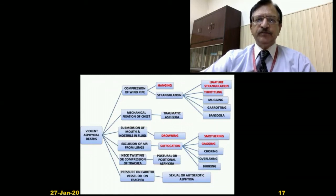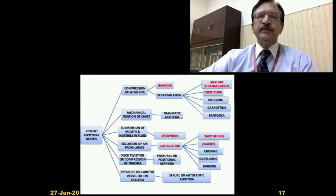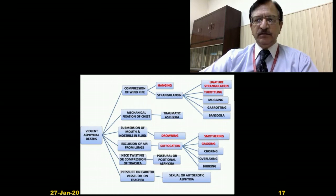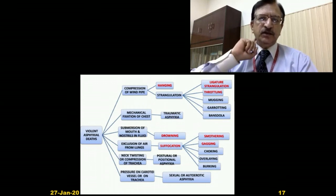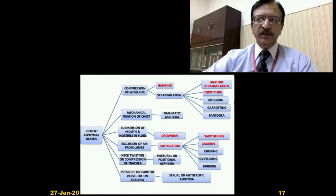Another classification of asphyxial death includes compression of the windpipe by hanging, strangulation, and mechanical fixation of the chest in stampede. Smothering is occlusion of the mouth and nostrils. Submersion of the mouth and nostrils in fluid is drowning. Exclusion of air by suffocation includes smothering, gagging, choking, overlaying, and burking — which is a special phenomenon. Twisting of the neck can also obstruct the respiratory passages. Pressure on the carotid sinus stimulates the vagus nerve and causes reflex cardiac arrest.